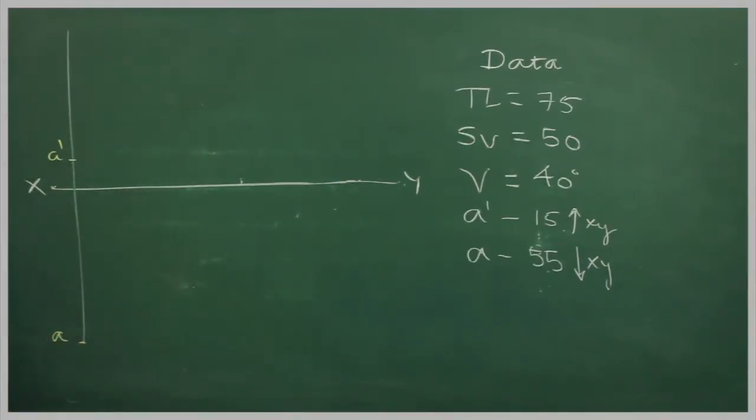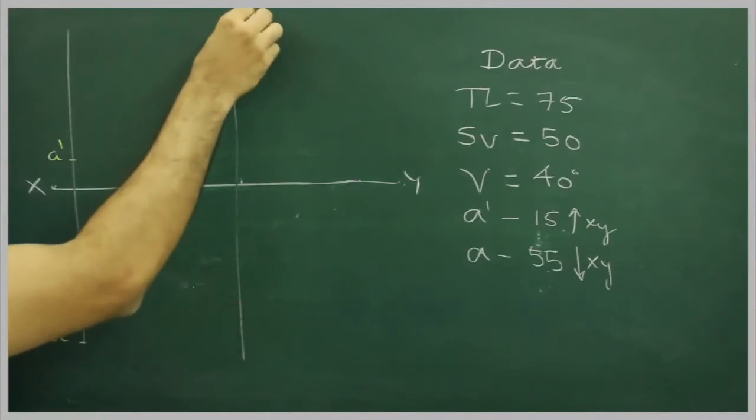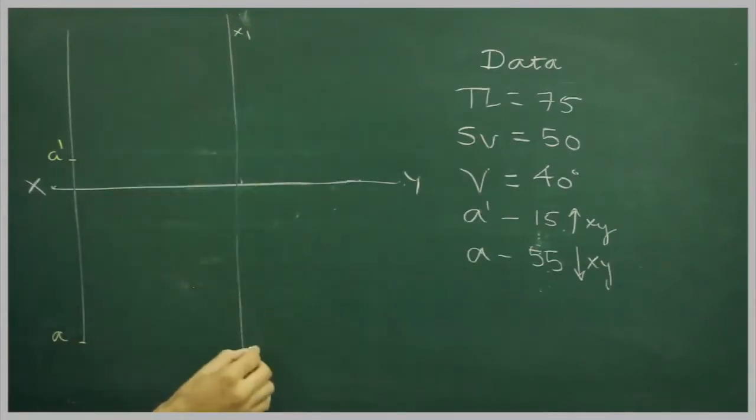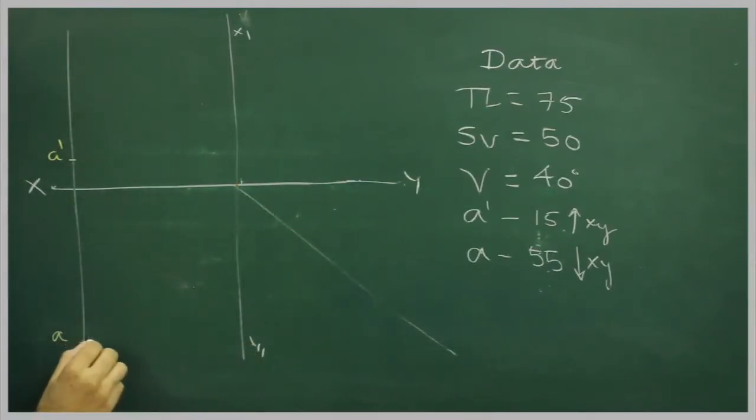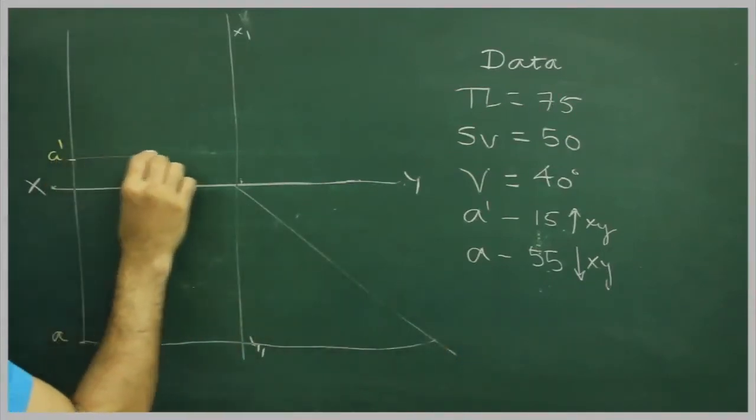Now if you see that given side view, so we need to plot A double dash. So what we will do, we will draw x1, x1 y1, and we take 45 degree from here. We will extend A from here and A dash from here.